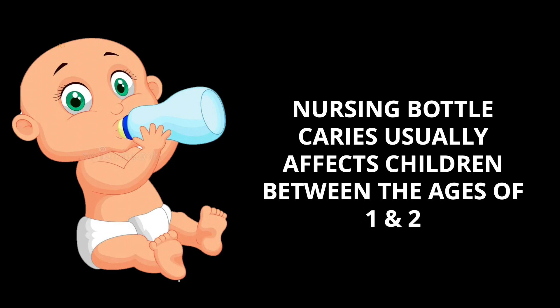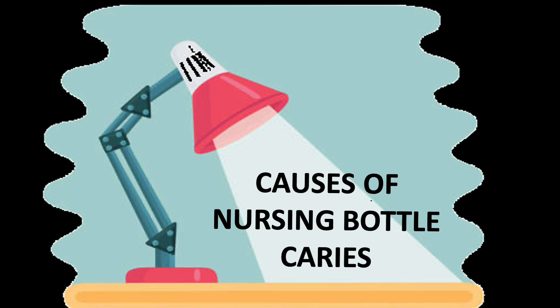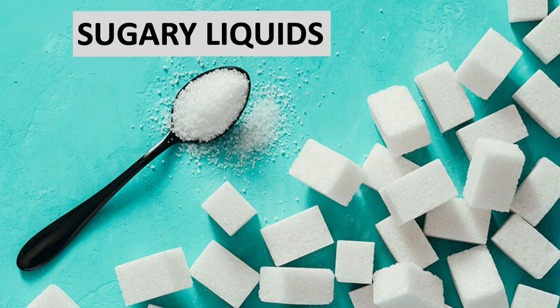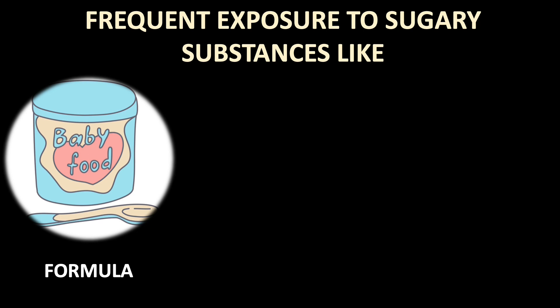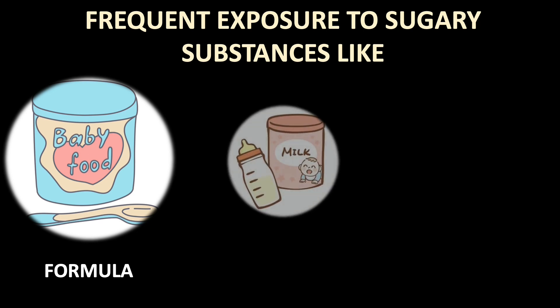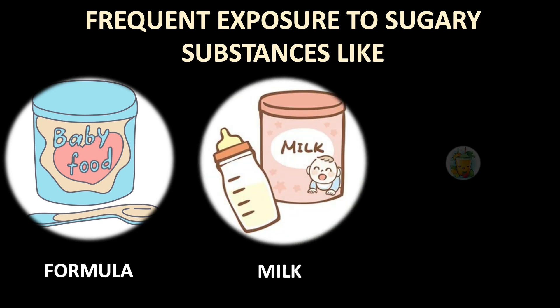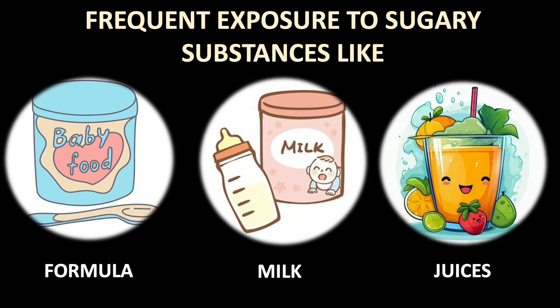It usually affects children between the ages of one and two, because that is the time period when children start feeding with the bottle. The most common cause of nursing bottle caries is sugary liquids. If you are giving sugary liquids in a bottle, it will result in caries with long-term use. Frequent exposure to sugary substances like milk formulas, juices, and various types of juices available in the market can also result in nursing bottle caries.